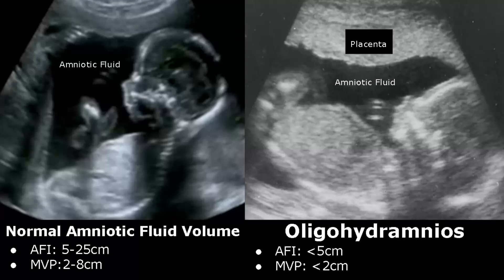Fluid volume can be assessed using the Amniotic Fluid Index or Maximum Vertical Pocket Method. In the Amniotic Fluid Index, or AFI, the uterus is divided into four quadrants and a measurement of the deepest pocket of fluid that is free of fetal parts and umbilical cord is taken in each quadrant.